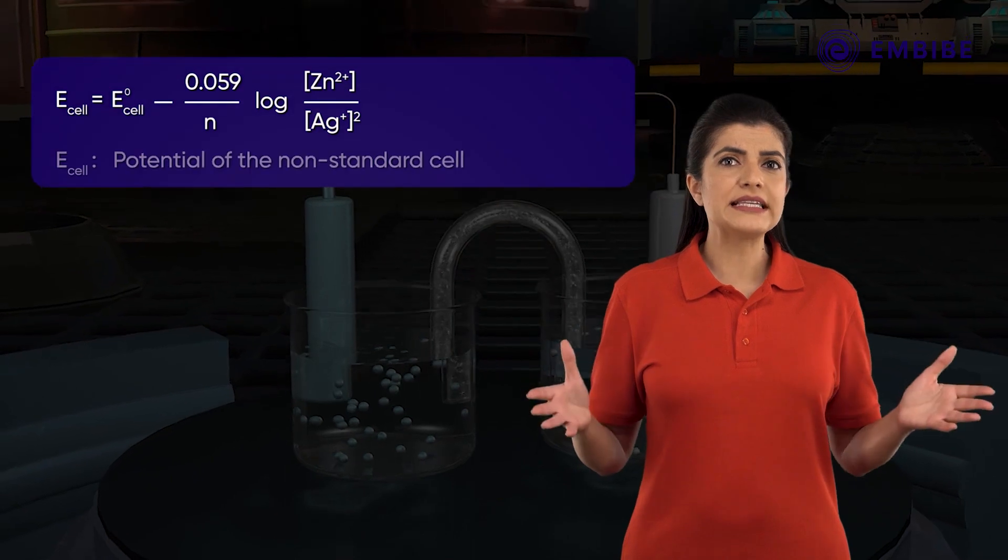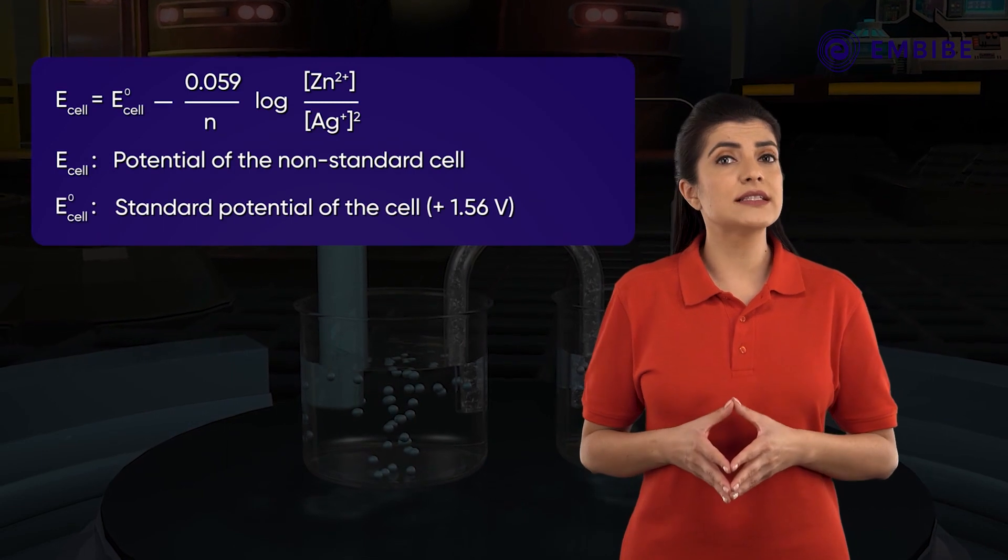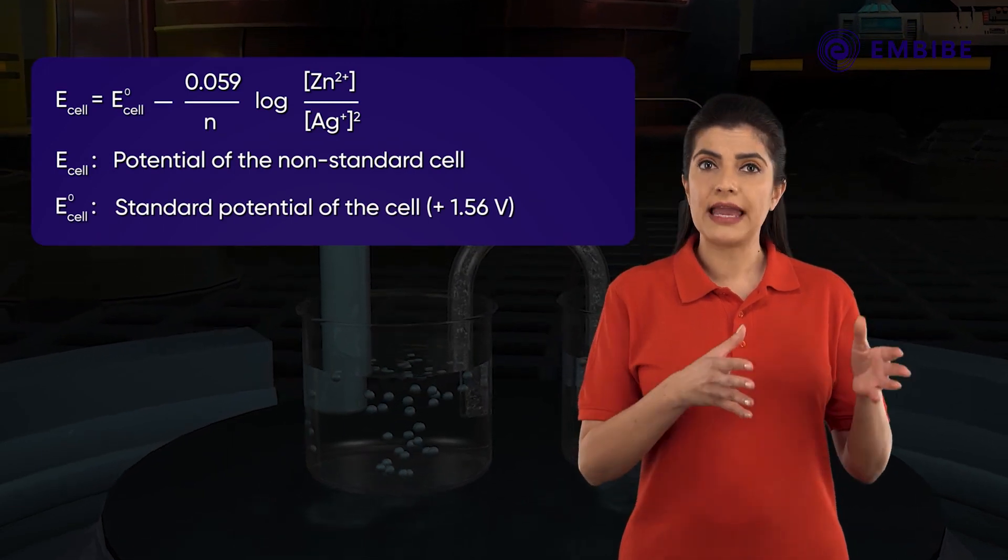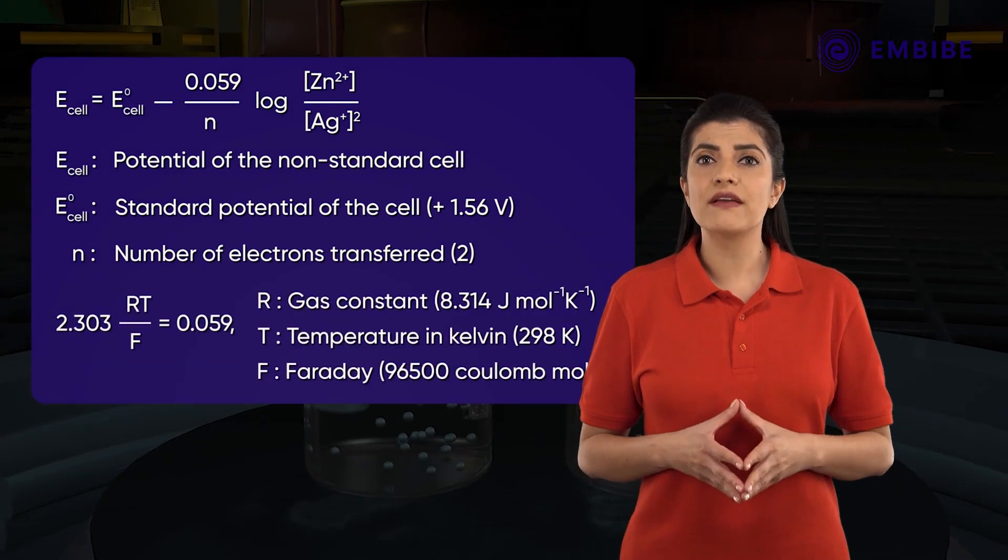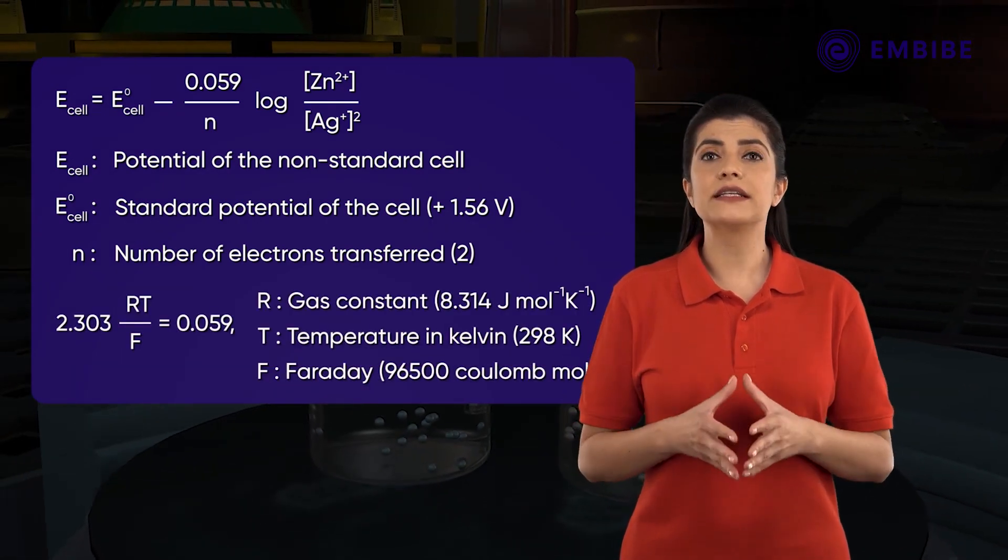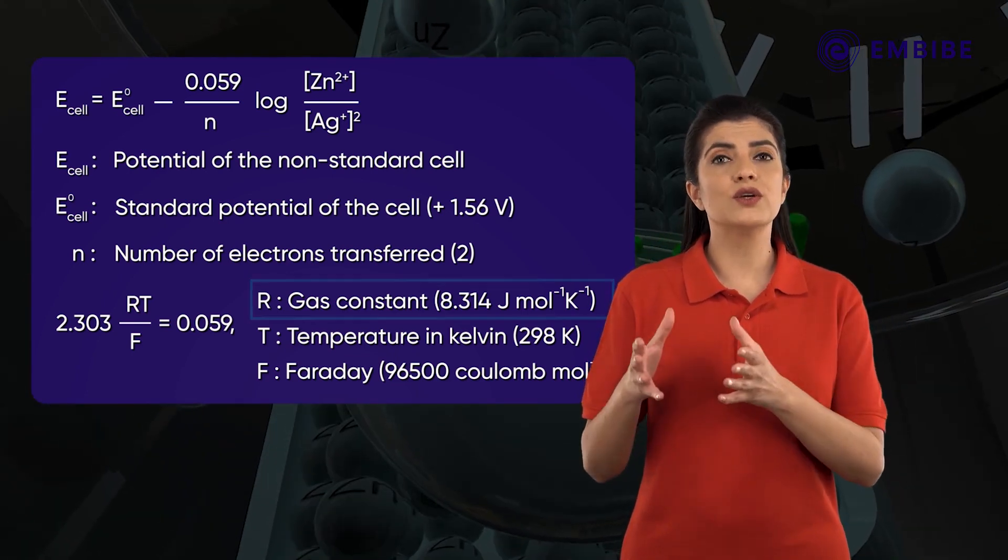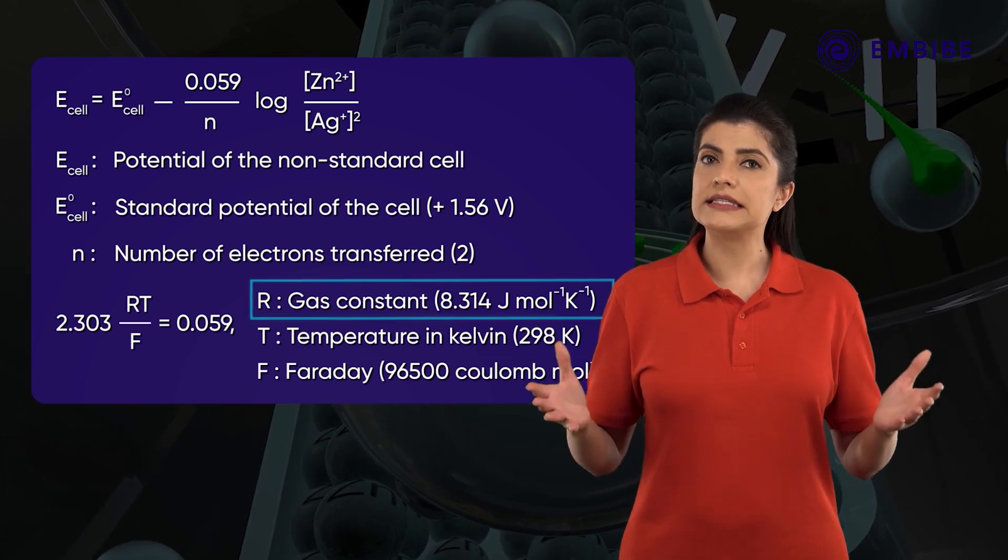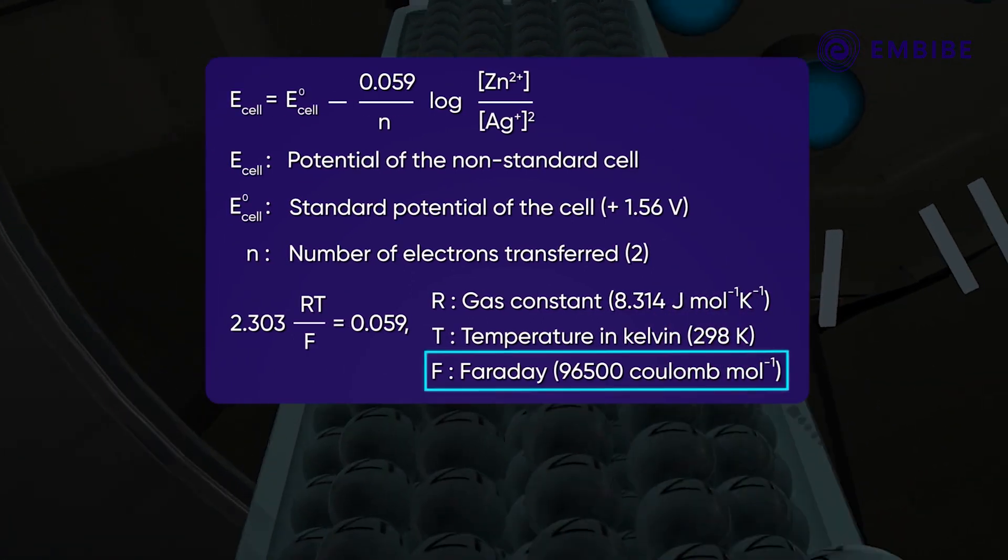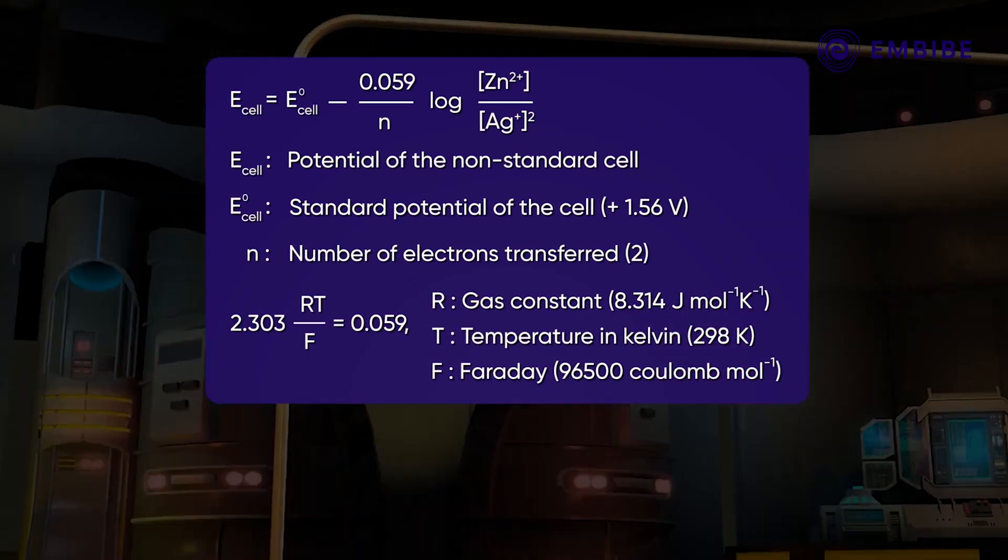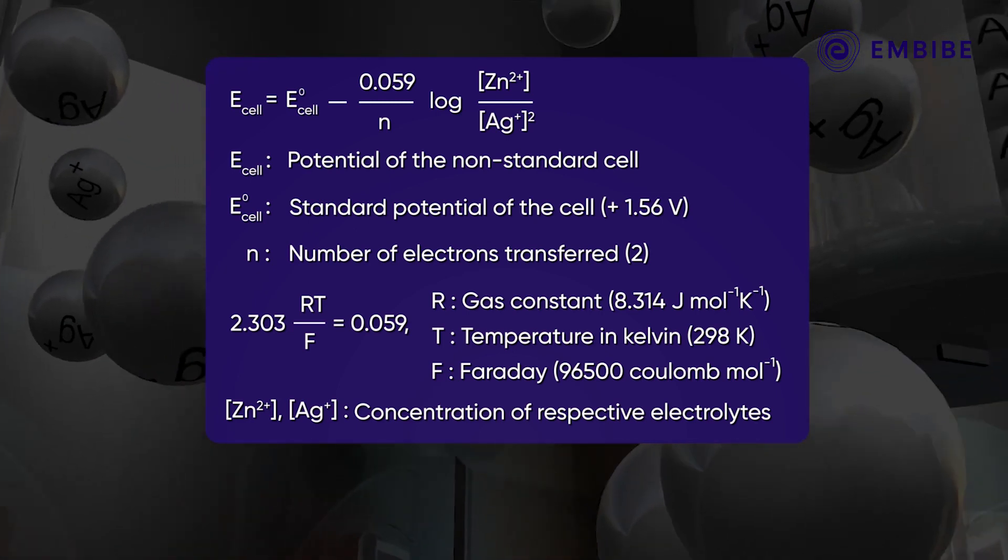Where E cell is the potential of the non-standard cell, E⁰ cell is the standard potential of the cell, n is the number of electrons transferred. The number 0.059 is the value of a factor 2.303RT upon F, where R is the universal gas constant, T is the temperature in Kelvin, and F is the Faraday.